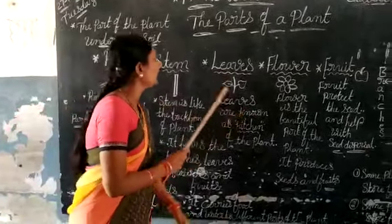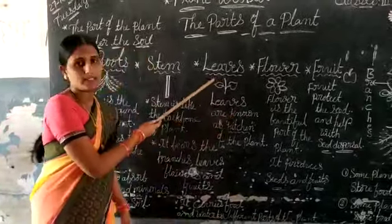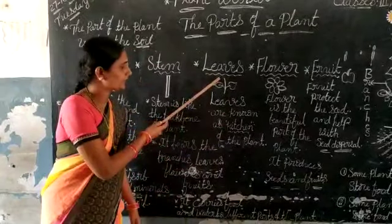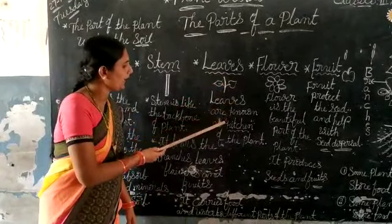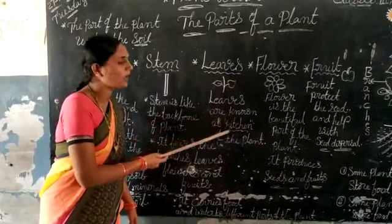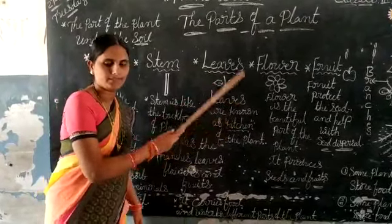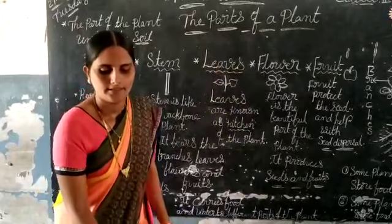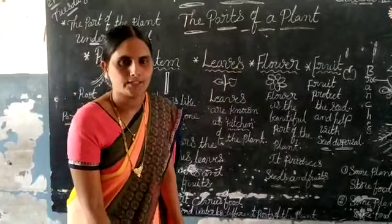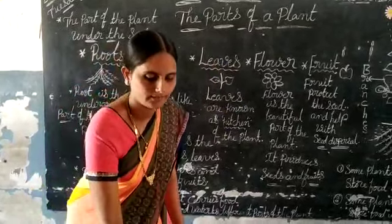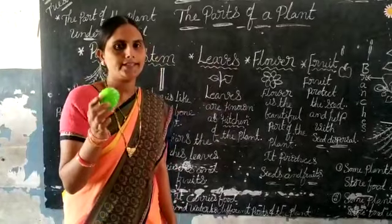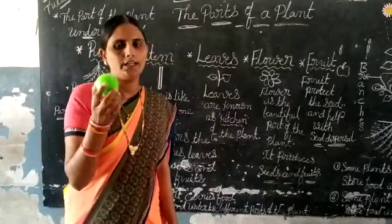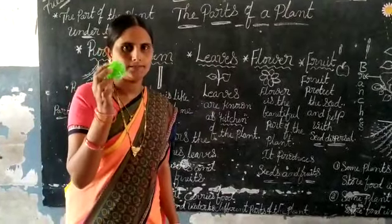Now let's discuss about leaves. Leaves are known as the kitchen of the plant. Some leaves like cabbage store excess food in the leaves.